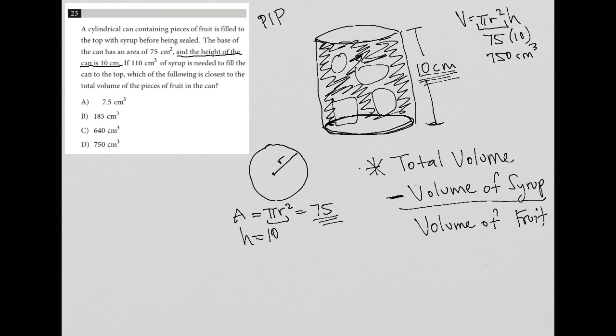How about the volume of the syrup? The question told us the volume of the syrup was 110 cubic centimeters. I'll subtract that. 750 minus 110 is 640 cubic centimeters. That must be the volume taken up by the fruit, which leads me to answer choice C.